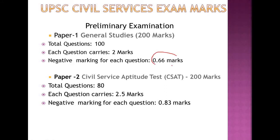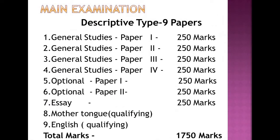In Paper 1 the negative score is 0.66, whereas in Paper 2 the negative score is 0.83 because Paper 2 has only 80 questions and each question carries 2.5 marks — though the total marks for both papers is 200 each. The overall selection is purely based on Paper 1 scores, while in Paper 2 the candidate only needs 33% as qualifying marks to proceed to the next level.